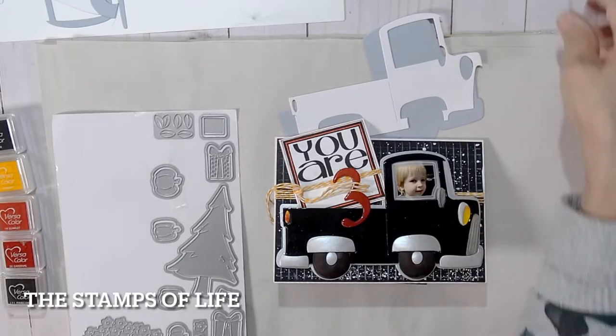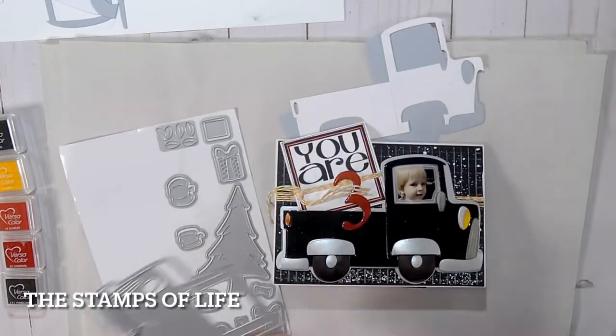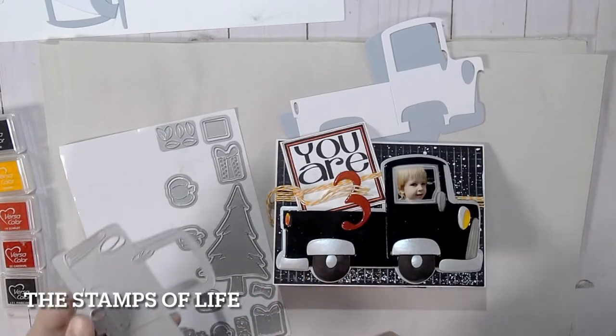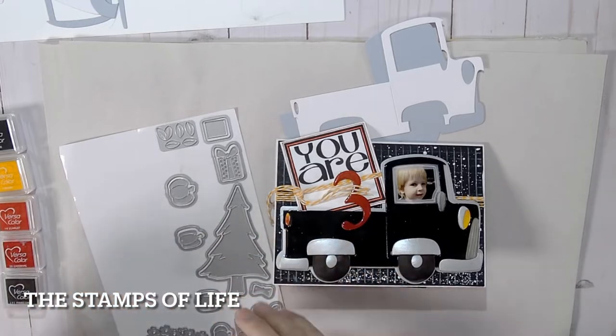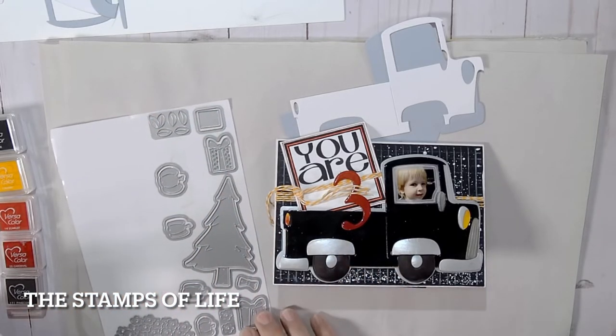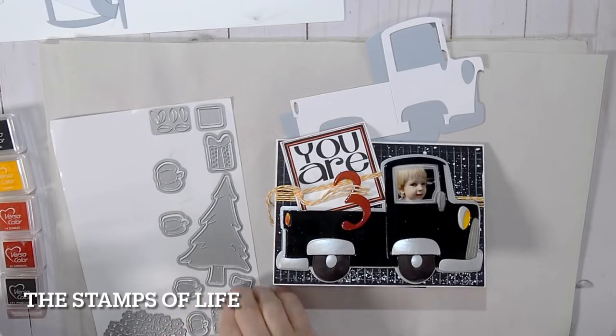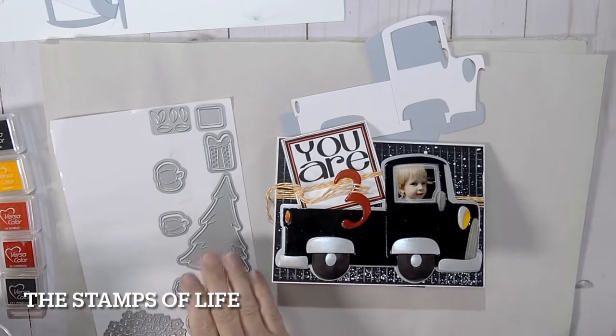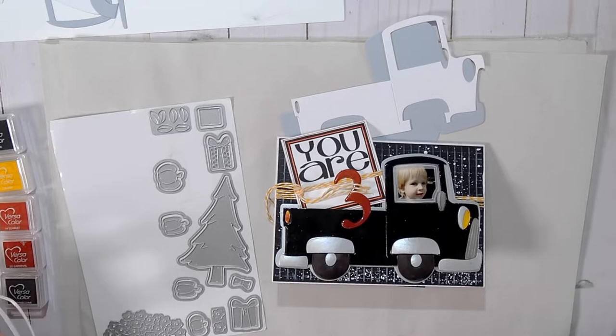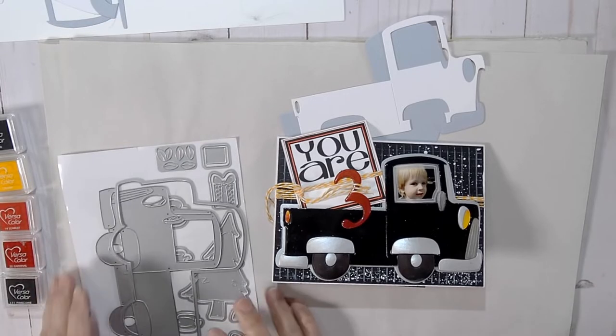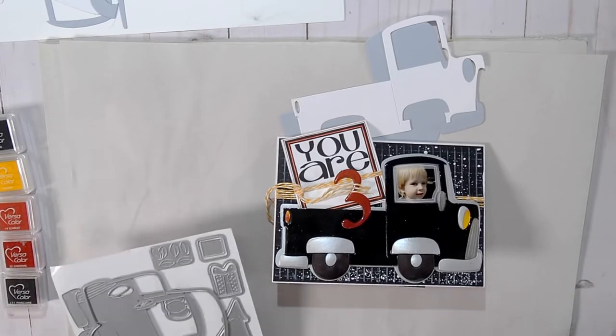Besides the two truck pieces, which has the base of the truck and all the pieces, look at all the extra pieces you get in here. Flowers and presents and pumpkins and bows and leaves and a tree. So it's basically a truck for all seasons. So much value in this particular die cut set.